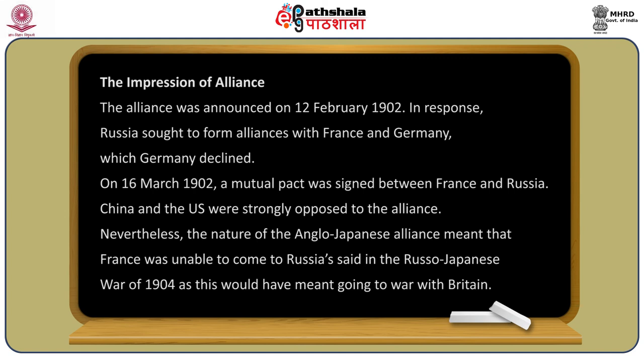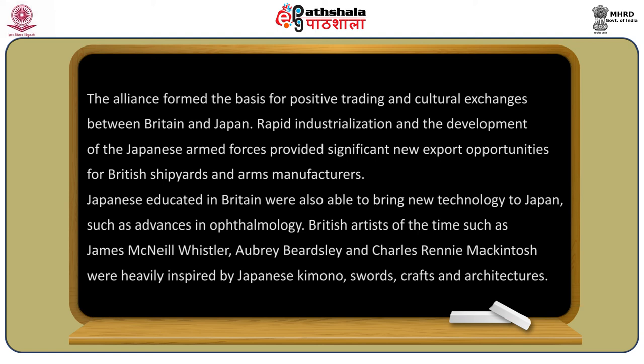The alliance was announced on 12 February 1902. In response, Russia sought to form alliances with France and Germany; Germany declined. On 16 March 1902, a mutual pact was signed between France and Russia. China and the US were strongly opposed to the alliance. Nevertheless, the nature of the Anglo-Japanese alliance meant that France was unable to come to Russia's aid in the Russo-Japanese War of 1904, as this would have meant going to war with Britain.